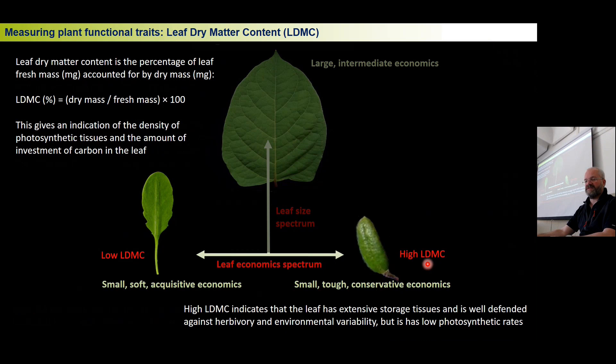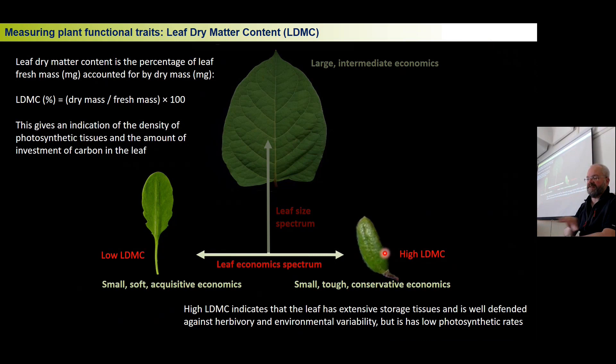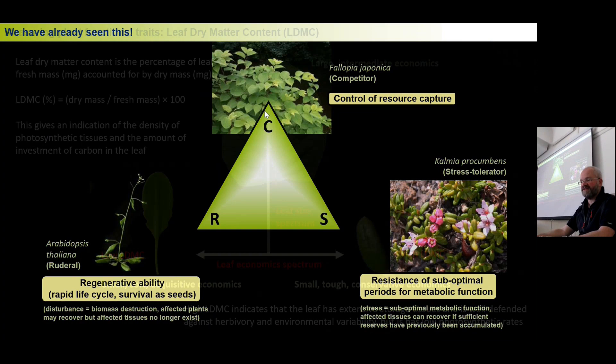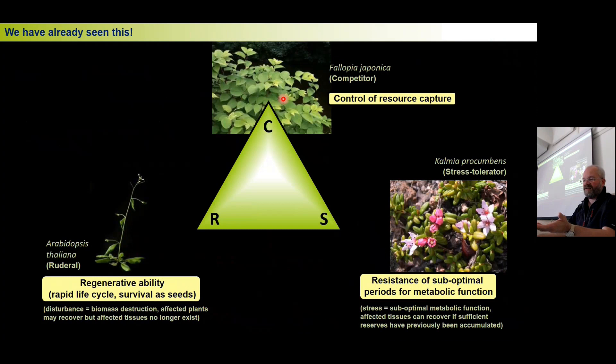We can also measure leaf dry matter content — essentially the opposite side of specific leaf area. The basic concept is: take a leaf, measure how big it is, measure how much it weighs, and calculate where it is on this scheme. These big leaves at the top — the large leaf size, the large plant size — are literally the same species used as examples for competitors. The economics between fast-growing ruderal R-selected species and slow-growing plants is equivalent to the CSR triangle.